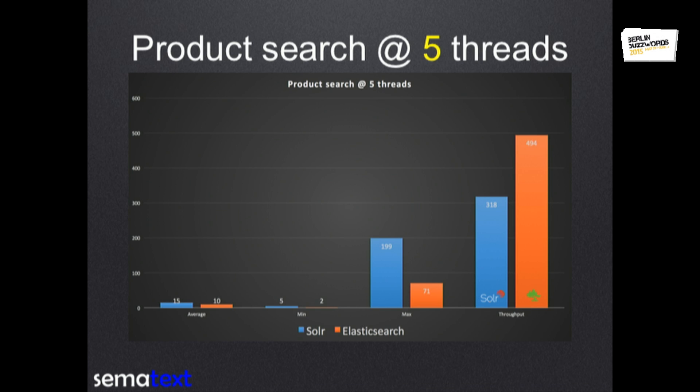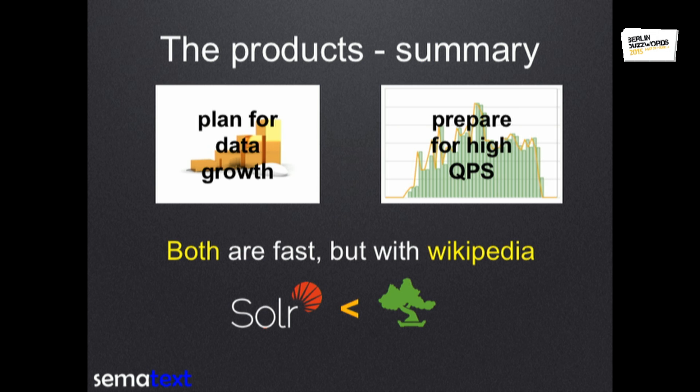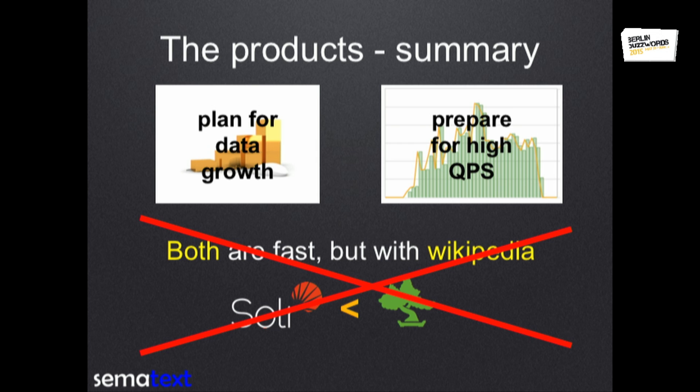When it came to the product search at five JMeter threads, we had about 500 queries per second for Elasticsearch and almost 320 queries per second for Solr. So in this case Elasticsearch is faster than Solr. But we noticed one thing: when we were indexing data, Solr had about 40% more Wikipedia data than Elasticsearch — we don't know why, we used the same XML. It was 5 o'clock yesterday, so we needed to do a few more tests. We screwed up a bit.